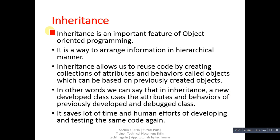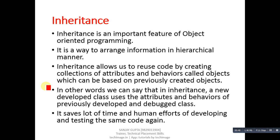Inheritance is an important feature of object-oriented programming. It is a way to arrange information in a hierarchical manner. Inheritance allows us to reuse code by creating collections of attributes and behaviors called objects, which can be based on previously created objects.